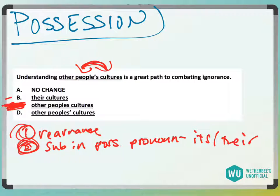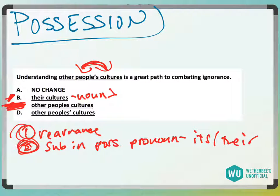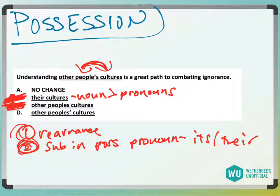Now, answer choice B — this is something for the ACT/SAT. Answer choice B technically is not grammatically incorrect, but if they give you the option, nouns are always going to be better than pronouns. You'll have questions where you have to choose among pronouns, but always choose the noun over the pronoun. Because we have "people's" as an answer choice, it's going to be better than "their," which is just a pronoun and can be ambiguous. Nouns over pronouns.